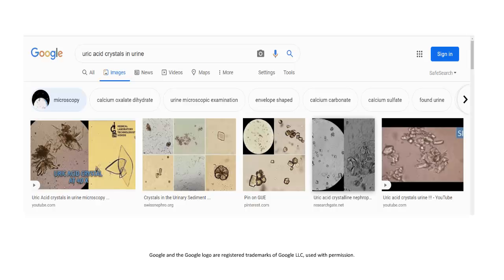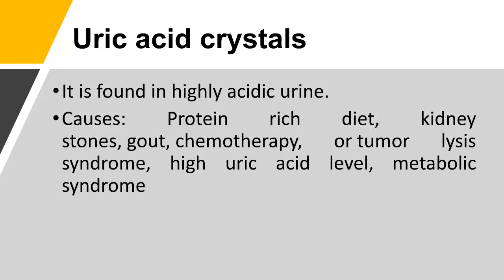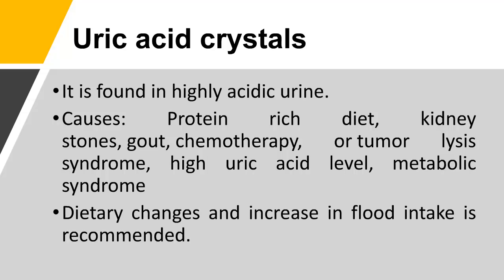Uric acid crystals in urine are found in highly acidic urine. Causes include a protein-rich diet, kidney stones, gout, chemotherapy or tumor lysis syndrome, high uric acid levels, and metabolic syndrome. Dietary changes and an increase in fluid intake are recommended.